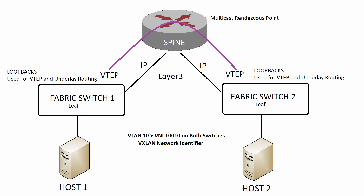First, you map a VLAN to a VNI — the VNI is essentially the VXLAN segment number. So we can map VLAN 10 to VNI 10010. That VNI number is globally significant, meaning all switches sharing that VXLAN must use the same VNI. The locally significant number — the VLAN ID — can be different on each switch. For example, VLAN 10 on switch 1 and VLAN 20 on switch 2 can both map to VNI 10010 and communicate with each other, though mixing and matching VLANs is not best practice.